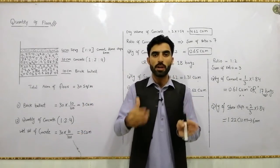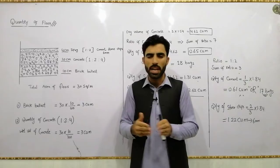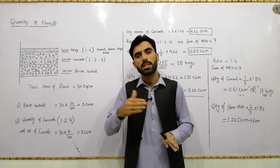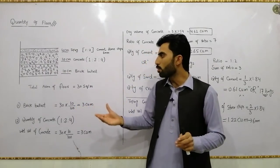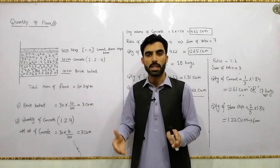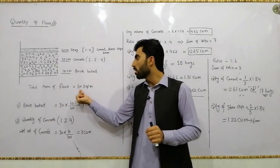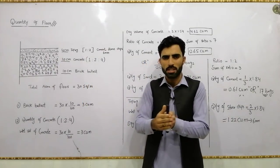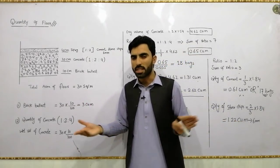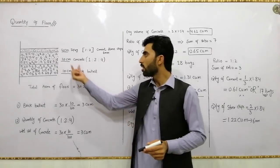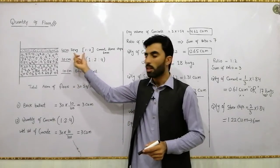First of all, you have to find the area of the floor — whether it is a room, veranda, or any place. Find the area of the surface where you need to estimate the floor material. The total area of floor we are using here is 30 square meters. This can be changed if your place is different. We already have the thickness of each layer and the total floor area of 30 square meters.